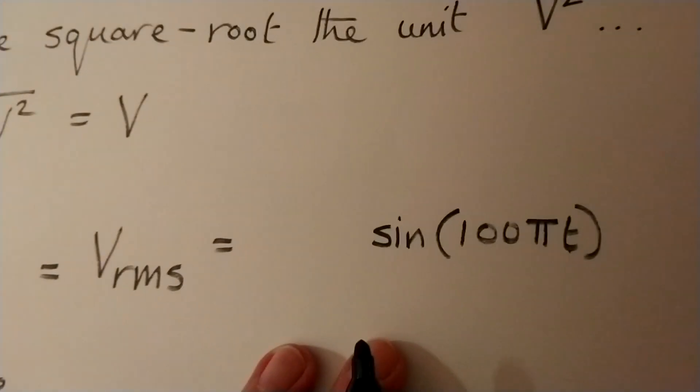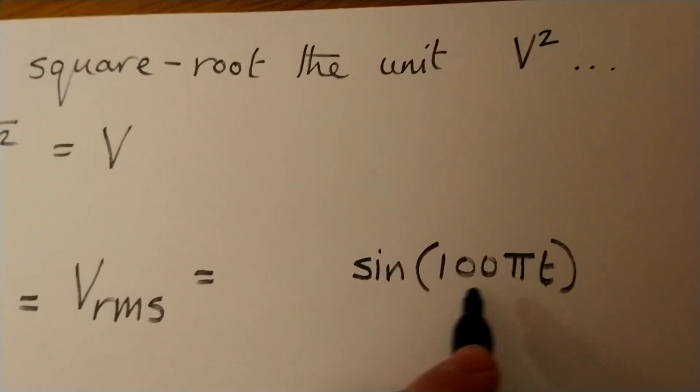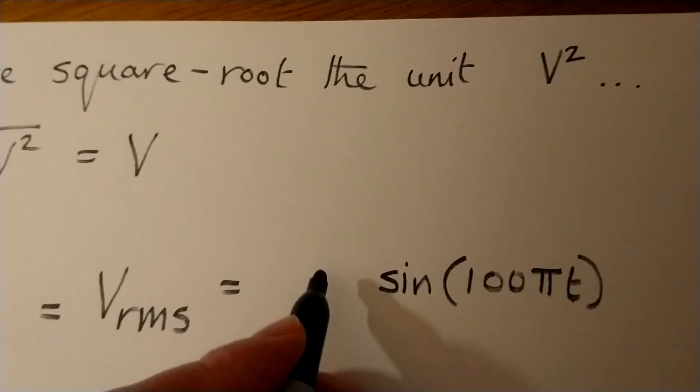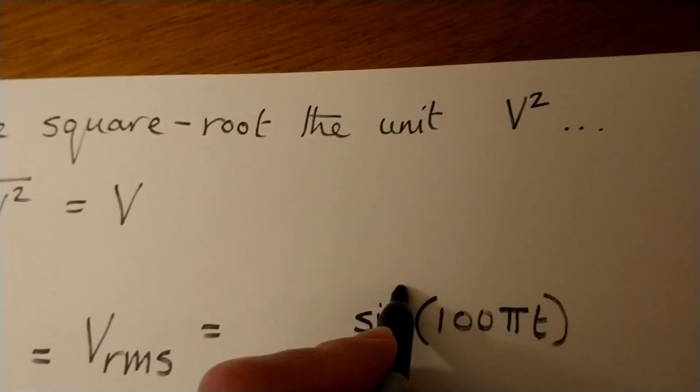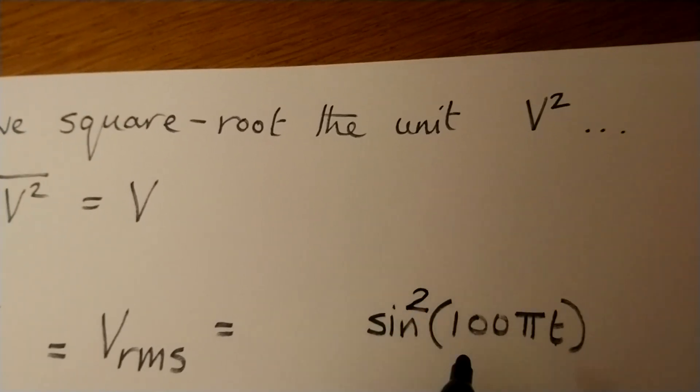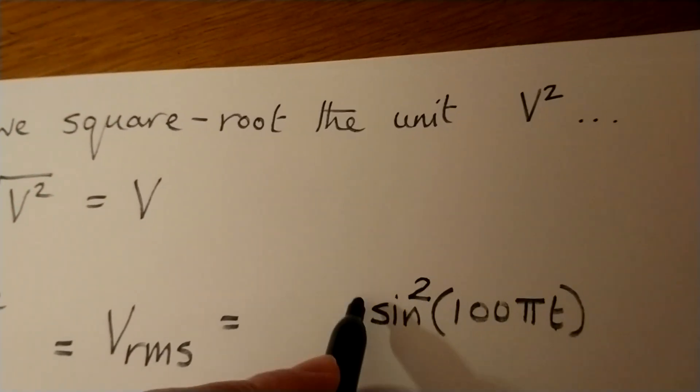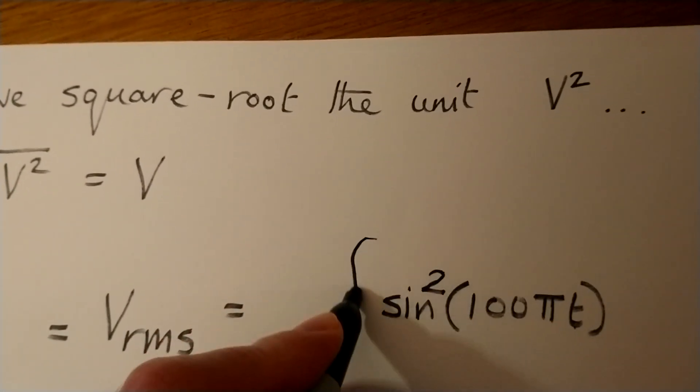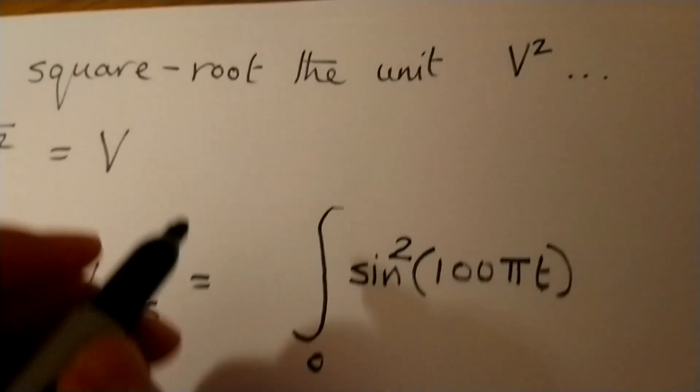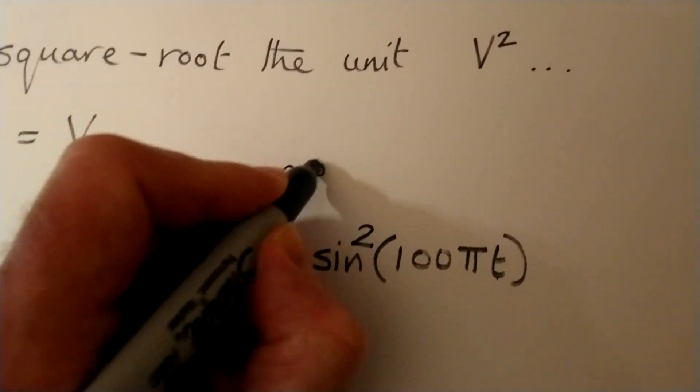So to work out V RMS, we take the voltage equation. And typically you'd have a number in front here, but the technique is still the same. You're going to square that. OK, so if you had a number out the front here, you would need to square that as well.